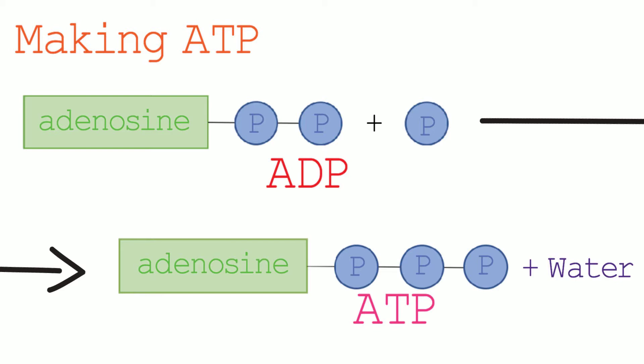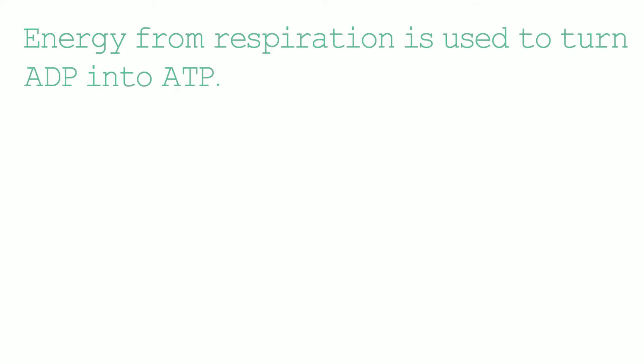So if we look at the diagram, we can see that we have ADP plus a phosphate. These are then going to combine together in the recharging process, which is going to produce ATP, and we're going to get water as well. Energy from respiration is used for this recharging process, which is a turning of ADP into ATP.